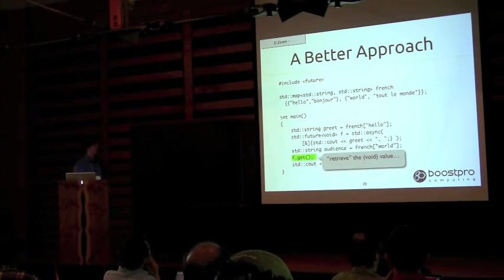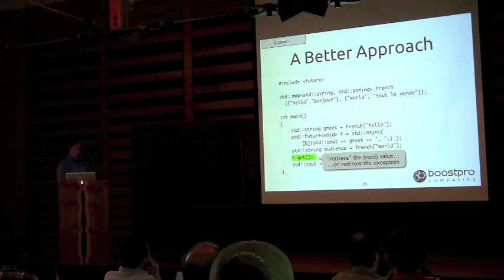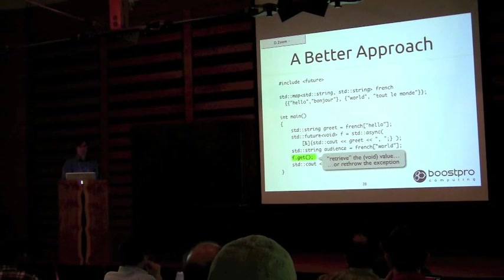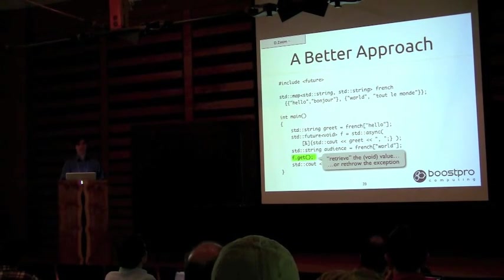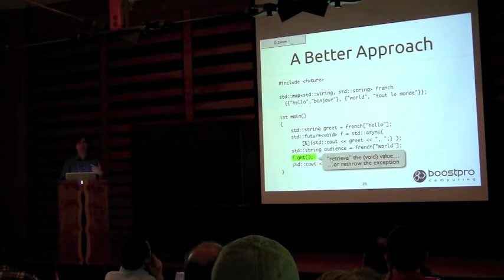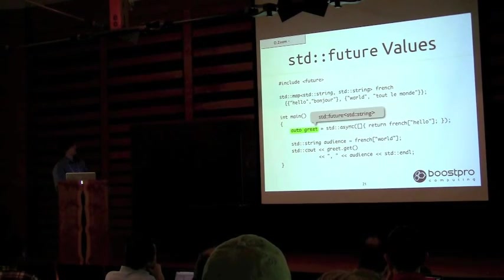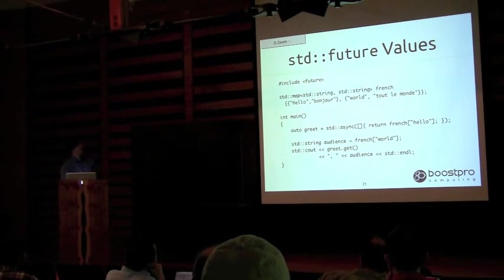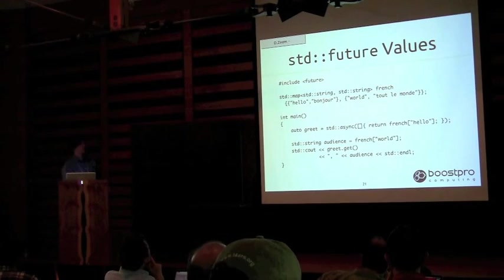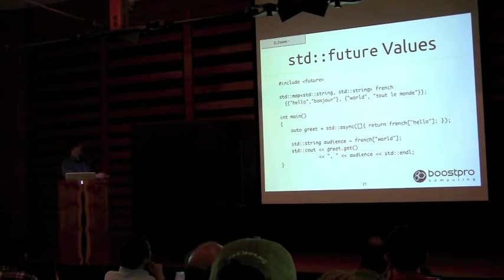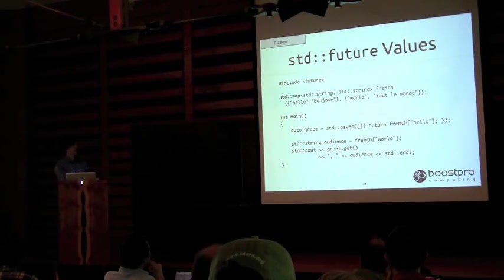Here's another future — this time I'm getting a future of string because I'm returning from my asynchronous execution. I put the string into the future, and when I call greek.get() at the bottom I wait until that string is ready. This is an easier way to write the very first example: I get serial output but asynchronous execution.